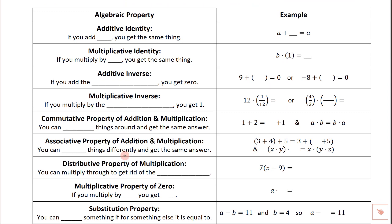In this column we've got the algebraic property, in this column we've got an example, and underneath each one is an easy phrase to remember what it does. The first property is the additive identity. When we say identity, you've got an identity, numbers and variables have an identity too — that's who they are. The additive identity means a number maintains its identity even though we added something. The only number you can add that doesn't change anything is zero, so a plus zero equals a. That's the additive identity.